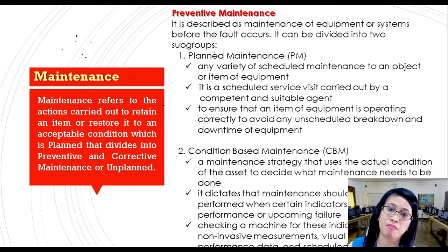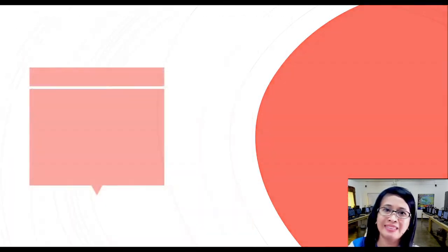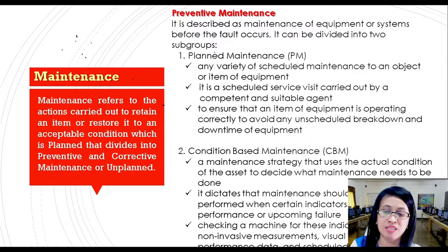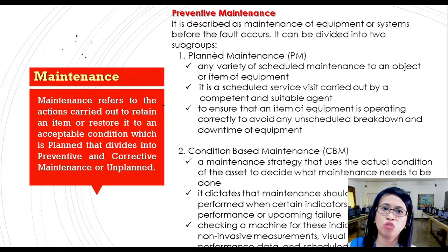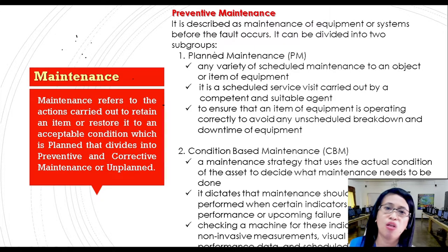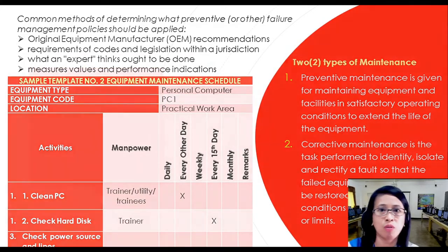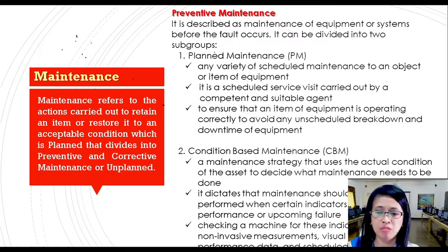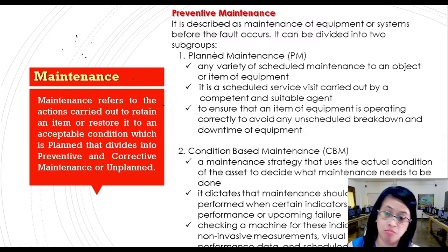We also have what we call condition-based maintenance (CBM), which is far different from planned maintenance. CBM is a maintenance strategy that uses the actual condition of the asset to decide what maintenance needs to be done. If you are already encountering that kind of problem or fault, you need to think of a way to resolve, diagnose, or rectify those faults. CBM dictates that maintenance should only be performed when certain indicators show decreasing performance or upcoming failure. Checking a machine for these indicators may include non-invasive measurements, visual inspection, performance data, and scheduled tests.